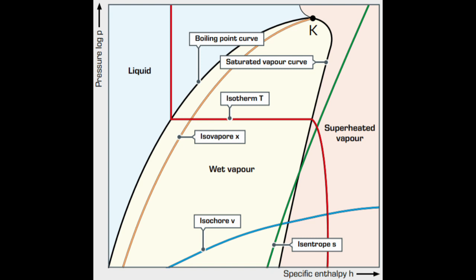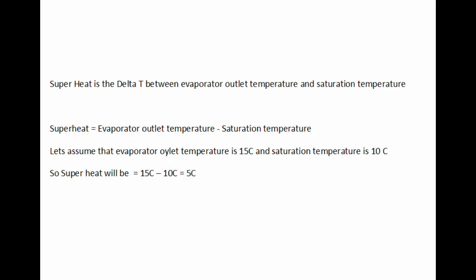Once you have these two values, you can calculate the superheat using the following formula. Superheat is the delta T between evaporator outlet temperature and saturation temperature.